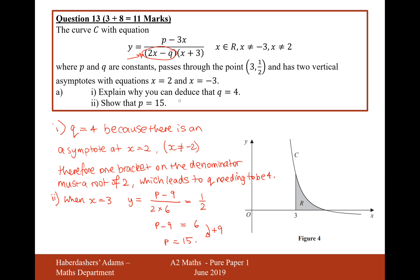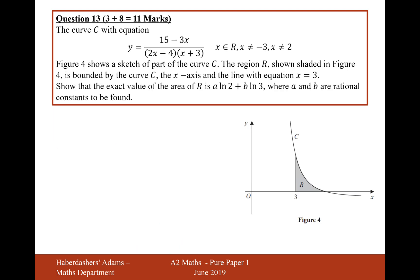It's because of this coordinate 3 and a half here, because the graph intersects 3, one half. Okay, so there we are. That's the answer to part a then. Let's now move on to part b. Figure 4 shows a sketch of part of the curve C. The region R is shaded by the curve C, the x-axis, and the line with equation x equals 3.